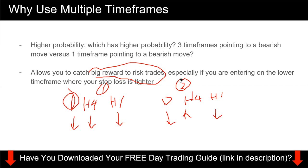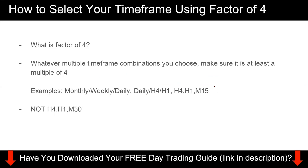Now that you're convinced, let's look at how to select your timeframe. I want to introduce you to the concept I call the factor of four. Whichever timeframe combinations you choose, you want to make sure it is at least a multiple of four. For example, the monthly-weekly-daily combination: monthly is about four weeks, and weekly to daily is about a factor of five since there are five trading days in a week. So you want to apply this factor of four rule.